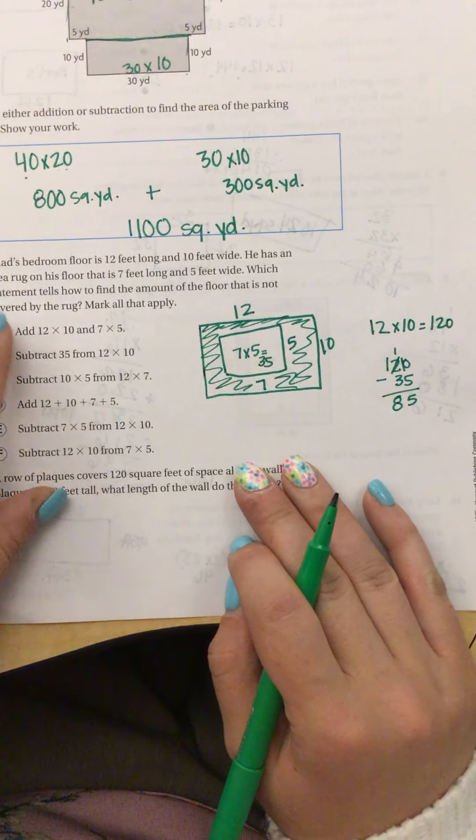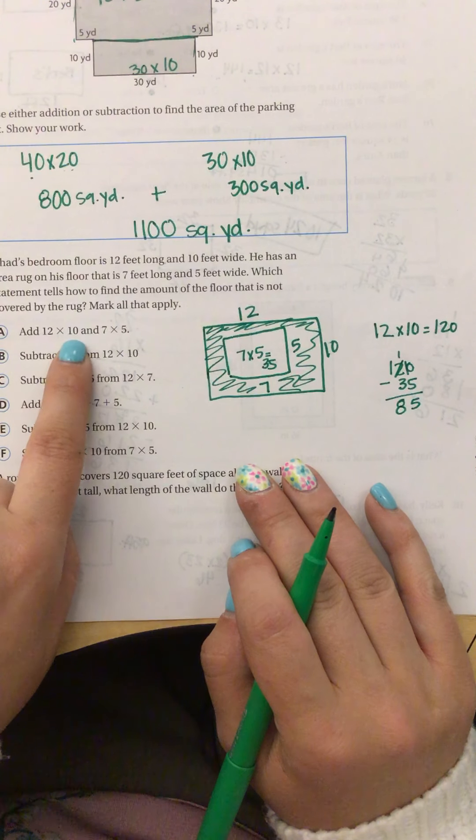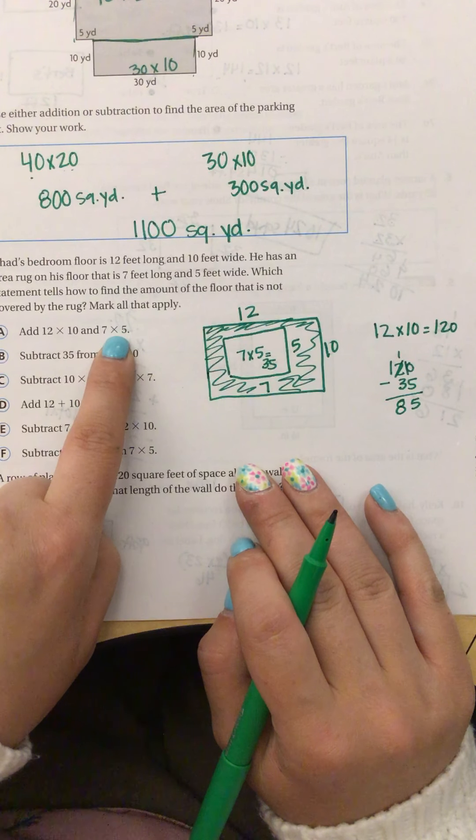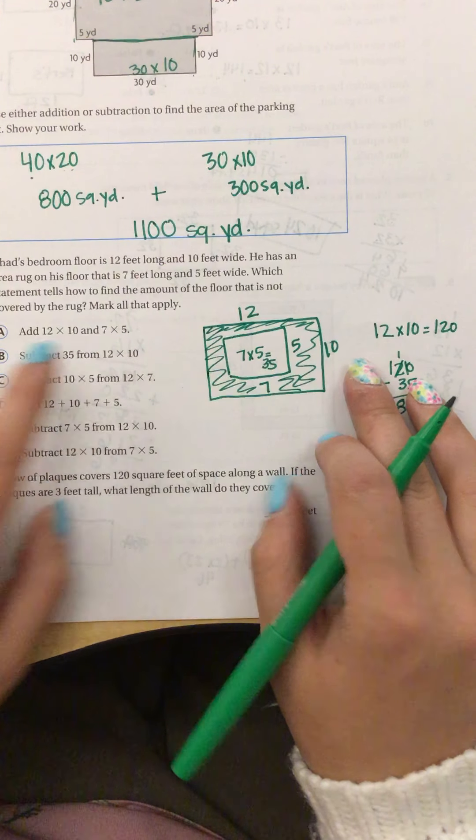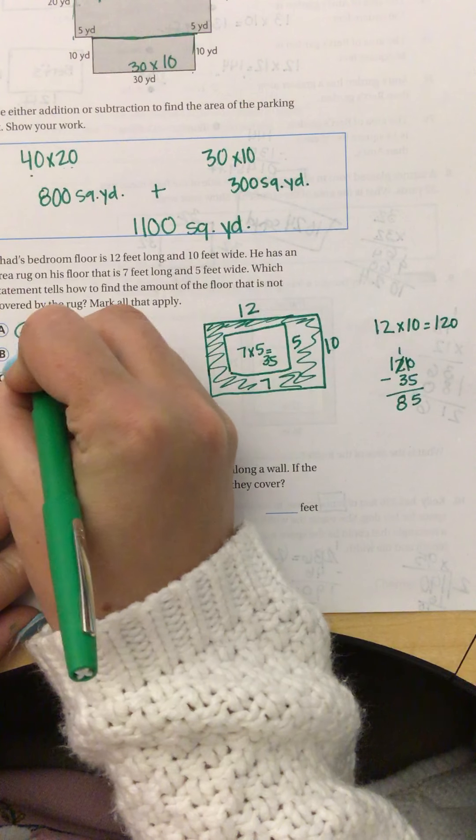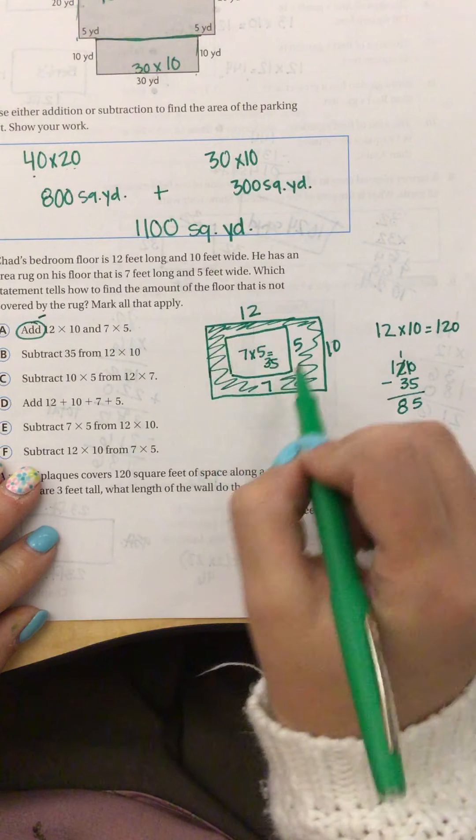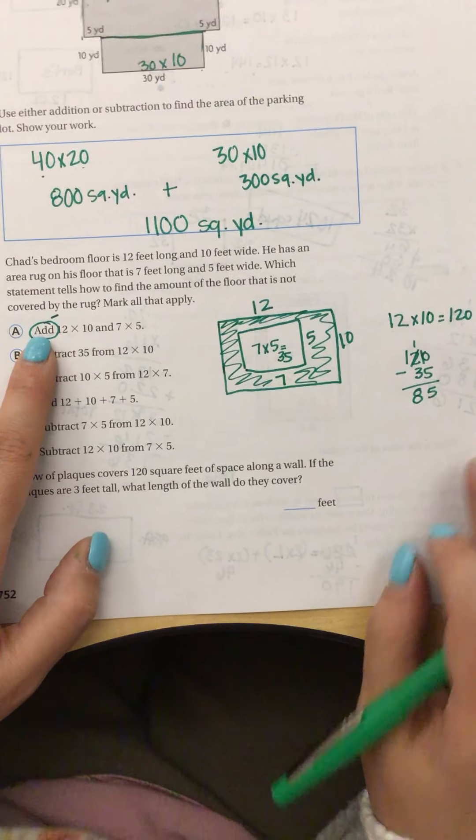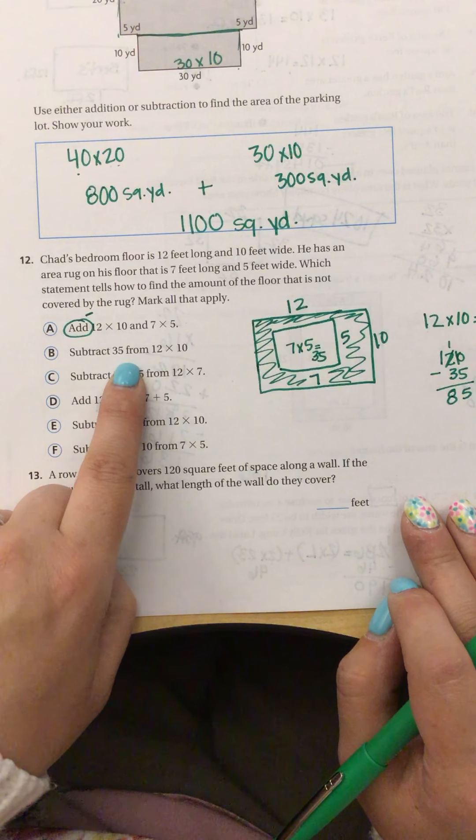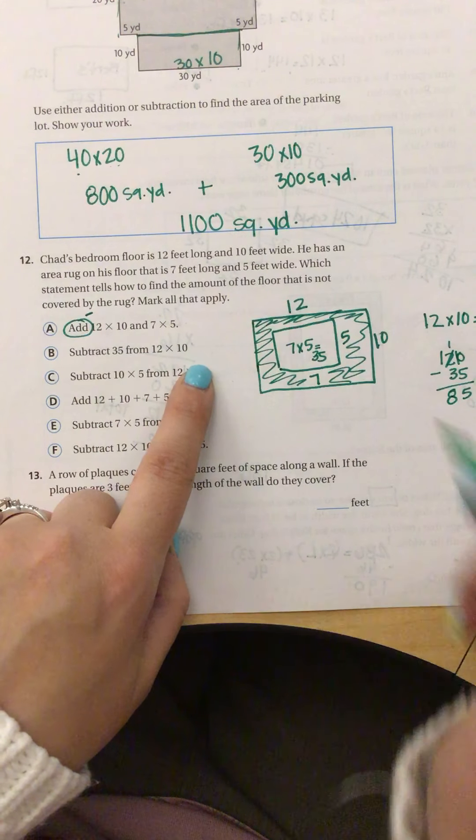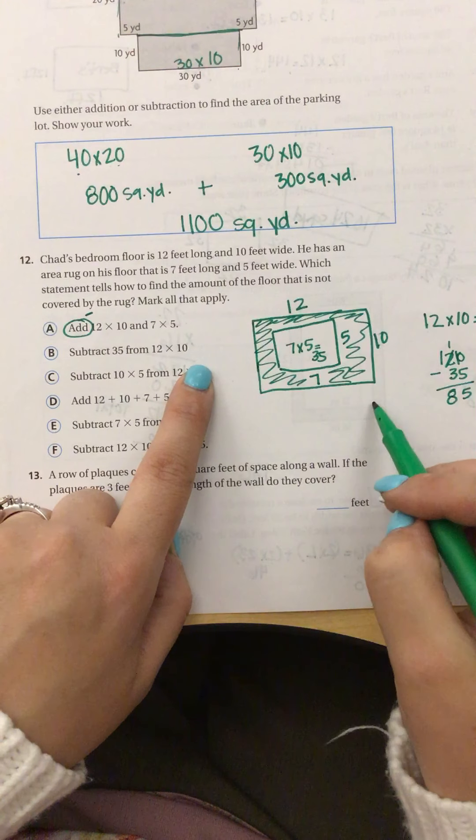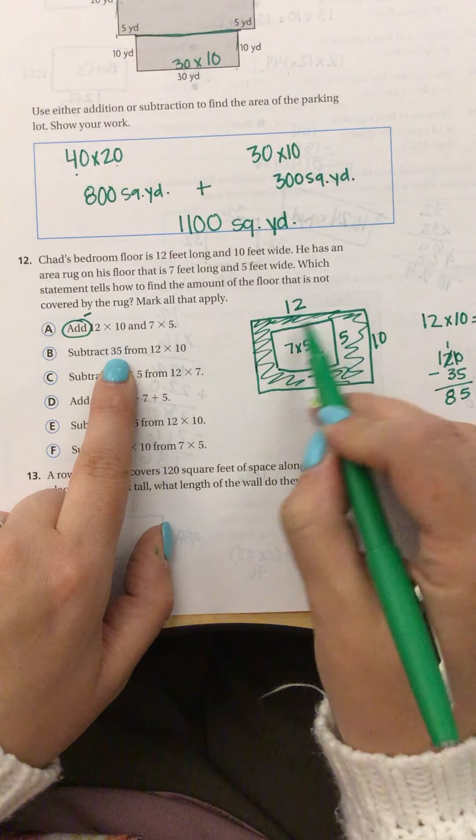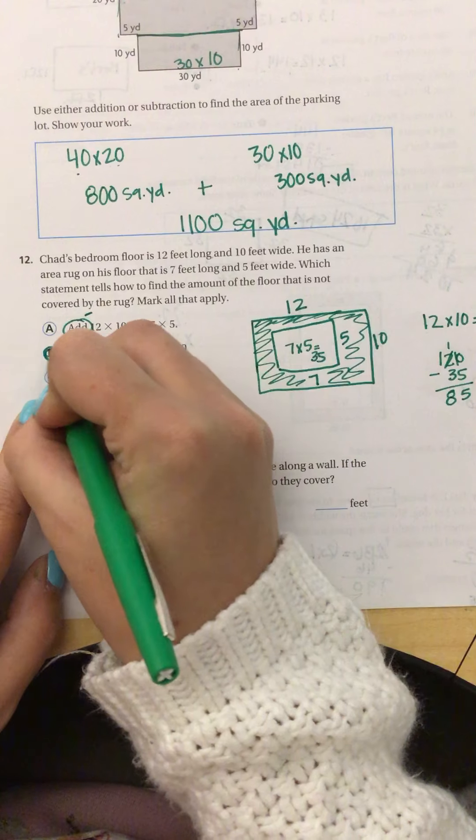Now, let's go through the options. Would I add 12 times 10 and 7 times 5? No, I would not add them because I want to subtract, because I don't want to include that area. So I would subtract, so that one is wrong. I would subtract 35 from 12 times 10. Well, 12 times 10 is the big area. 35 was the total area, so yes, I would subtract that amount.